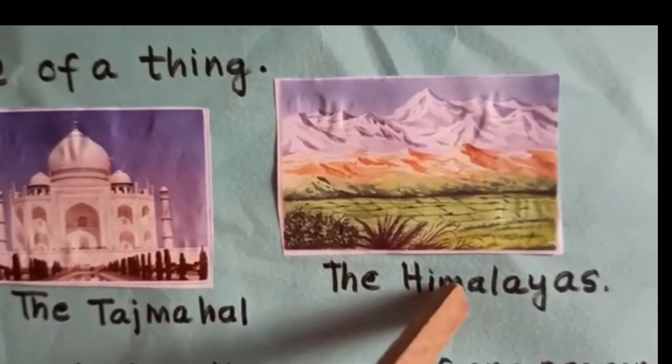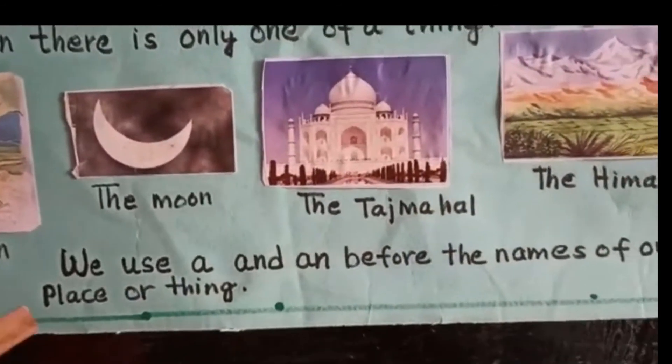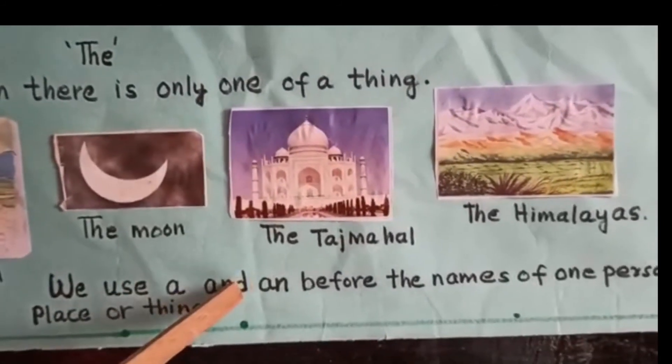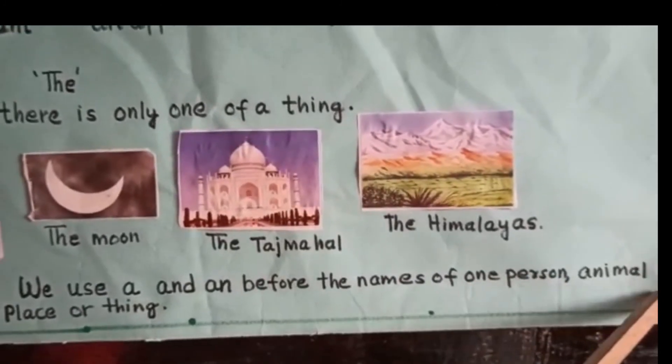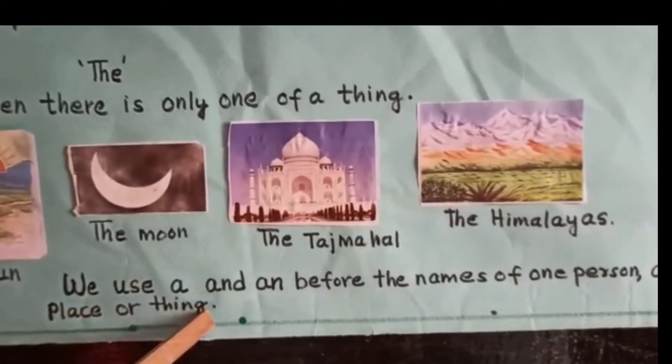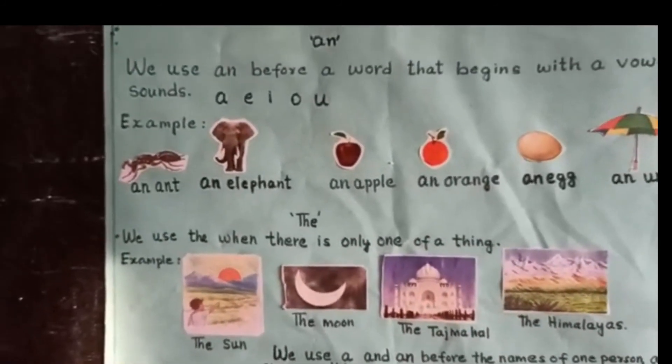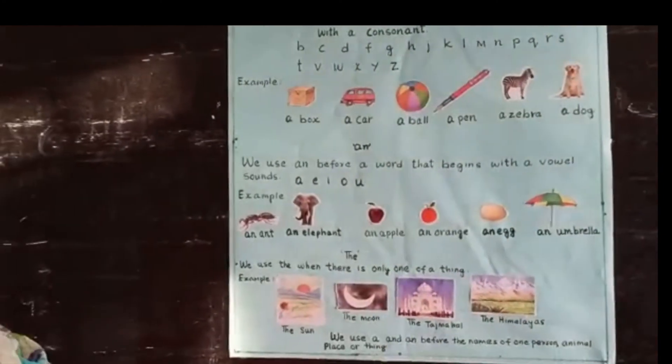The Himalayas. We use a and an before the names of one person, animal, place or thing. We cannot use a and an for more than one thing. Thank you. God bless you.